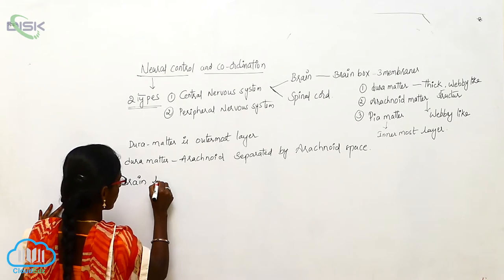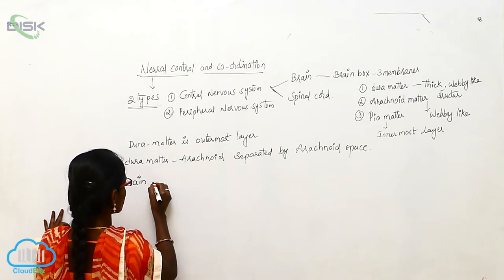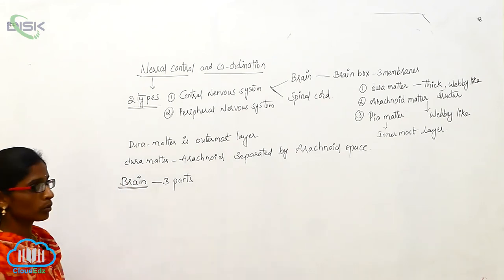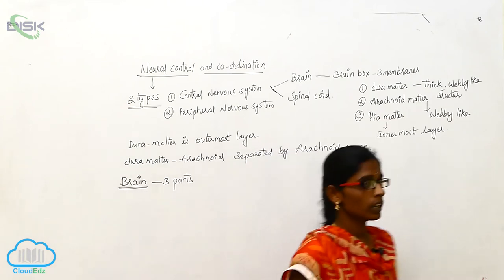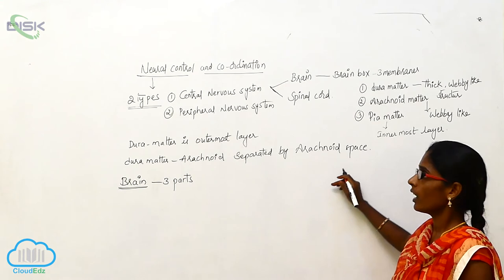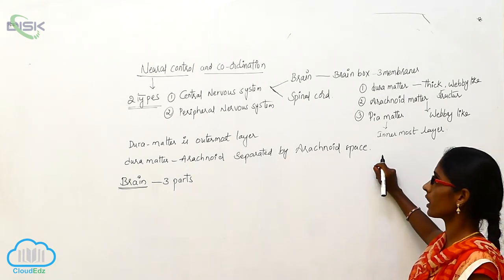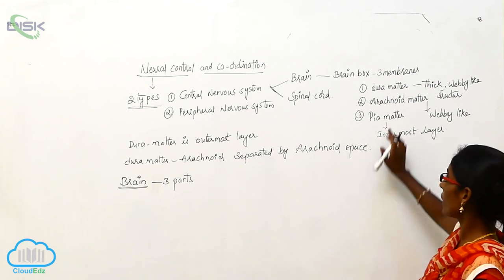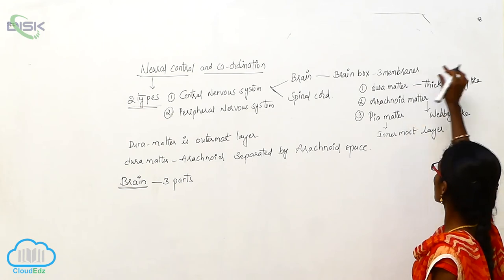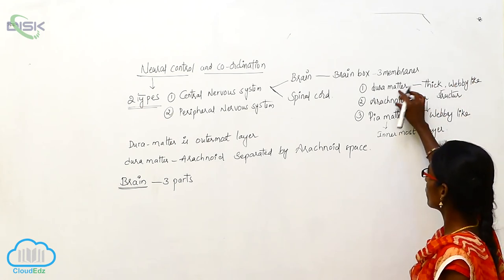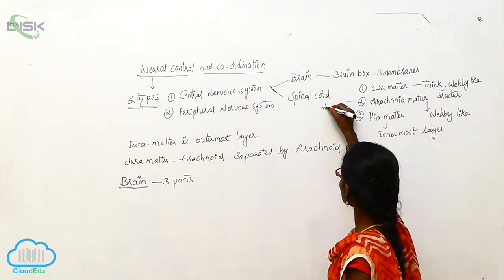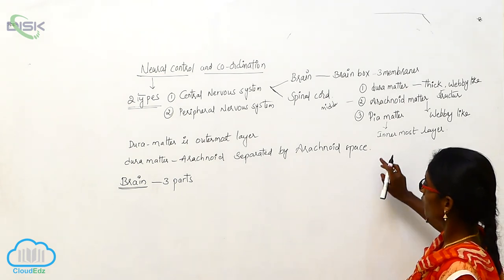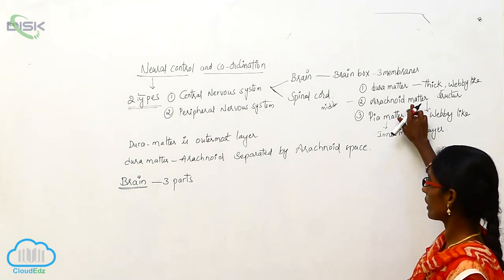The brain is divided into three parts. To summarize: the neural system divides into two types — Central Nervous System and Peripheral Nervous System. The CNS has two parts: Brain and Spinal Cord. The brain is in the brain box, covered by three membranes — Duramater (outermost, thick), Arachnoid Matter (middle), and Piamater (innermost).